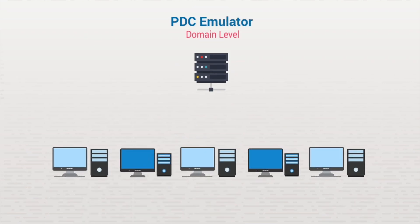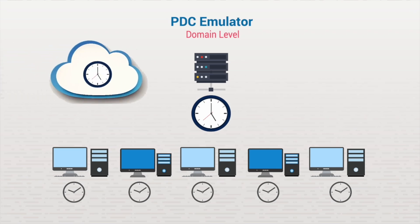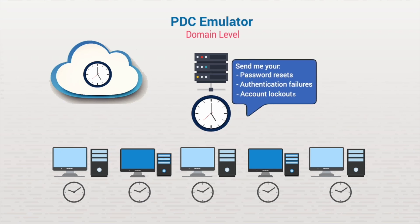The second FISMO role at the domain level is the Primary Domain Controller, or PDC Emulator. The PDC Emulator's key role is to synchronize time in the enterprise. Because the enterprise uses Kerberos for authentication, all computers within the network must use a common time. The PDC Emulator is the authoritative source — it eliminates loops and is the source that all computers sync with in a domain. It gets its time from an outside source. The PDC Emulator role is also preferred for security updates. It is the first domain controller to get password resets, authentication failures, and account lockouts.